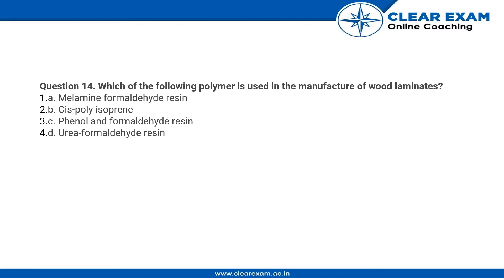Hi guys, here is another question. Which of the following polymers is used in the manufacture of wood laminates? The first option is melamine formaldehyde resin. Second option is cis polyisoprene. Third option is phenol formaldehyde resin, and fourth is urea formaldehyde resin.